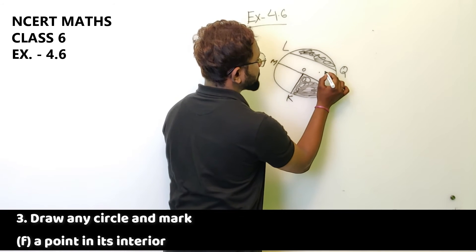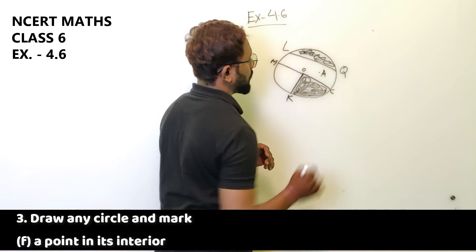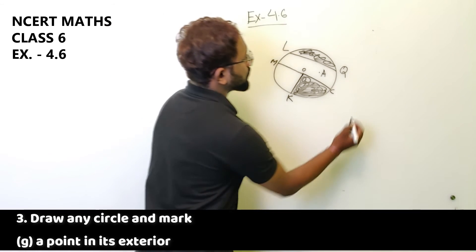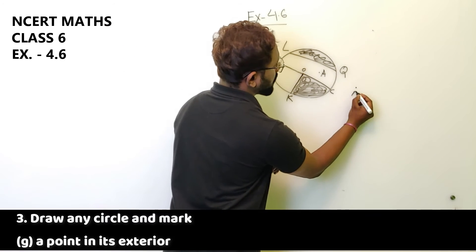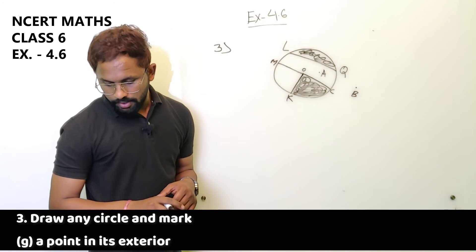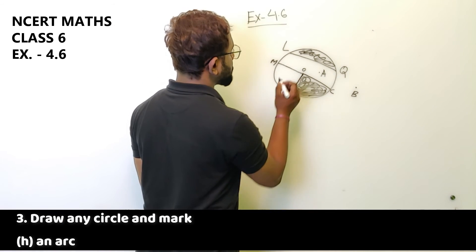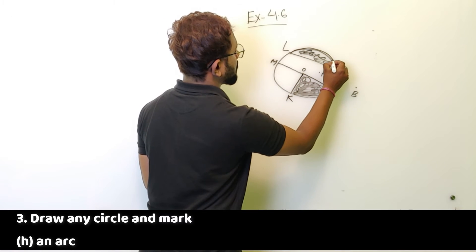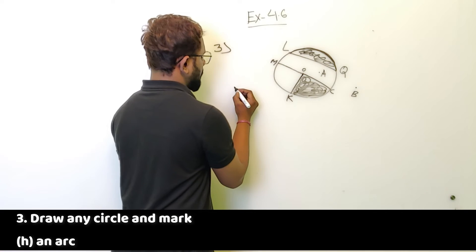The point in the exterior, point in the exterior, this is B. An arc, so an arc is, this is the arc. Arc is LQ.